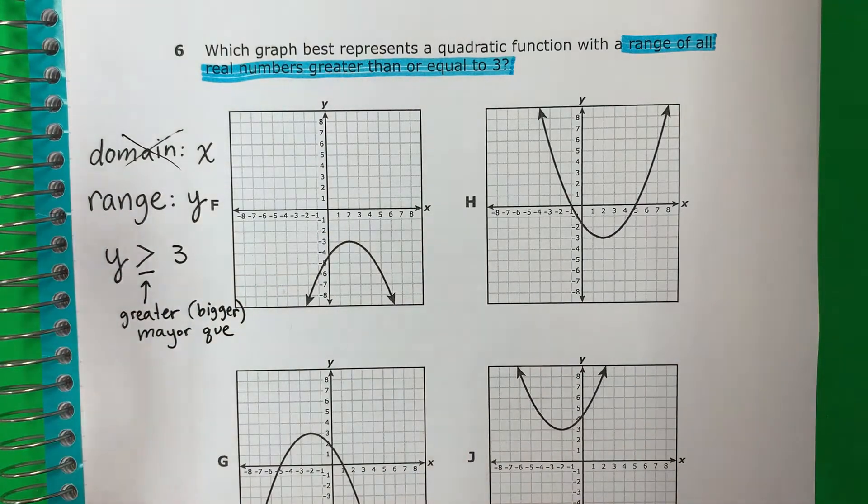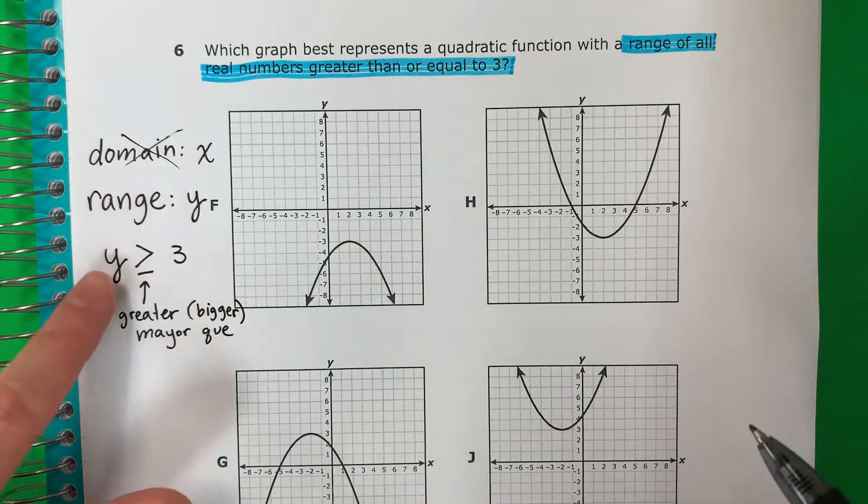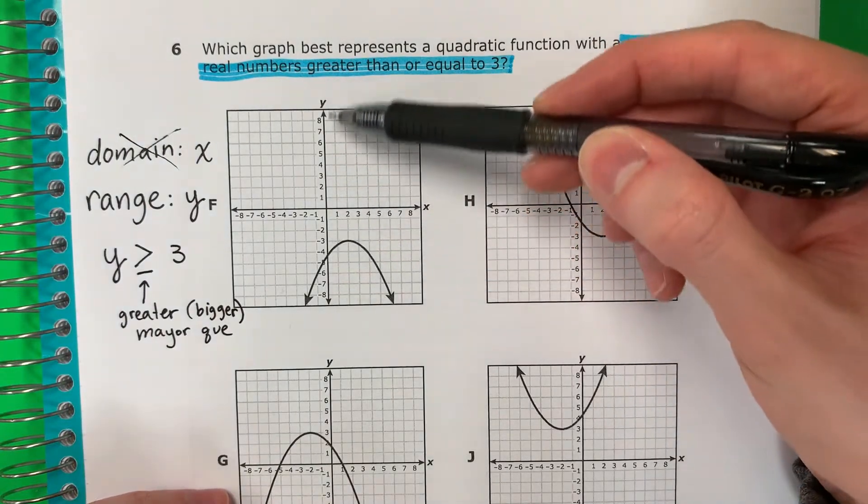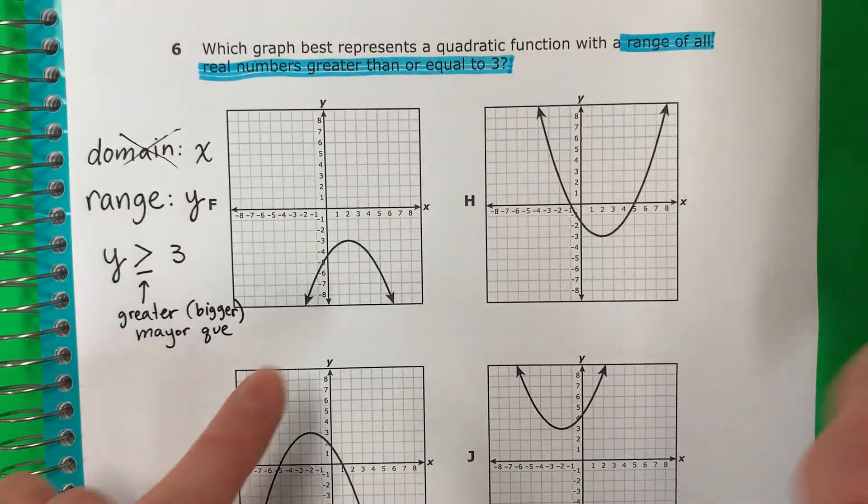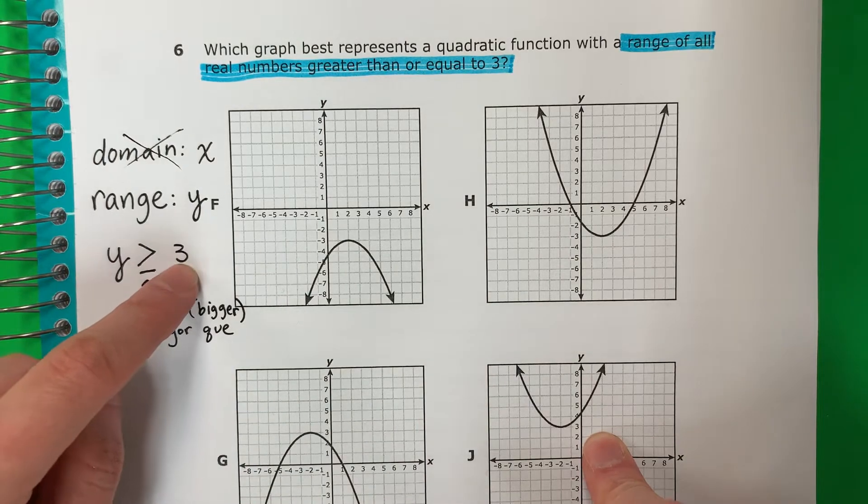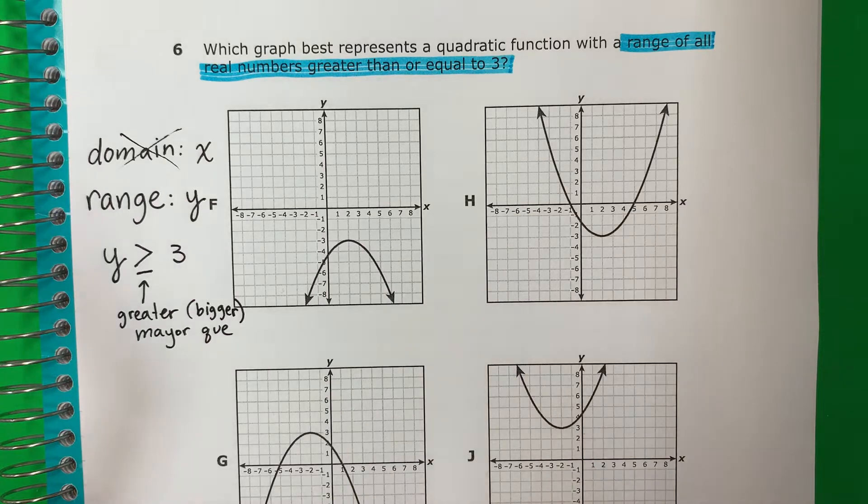Okay, so we want numbers bigger than 3. Queremos números mayor que 3. So it's y, es y. So we're only going to be looking at the vertical. Okay, so we want to see which of these graphs has numbers 3 or bigger. ¿Cuáles de estos números tienen números 3 o mayor?